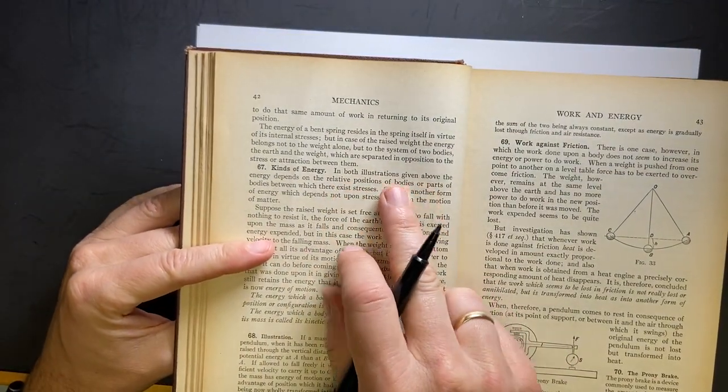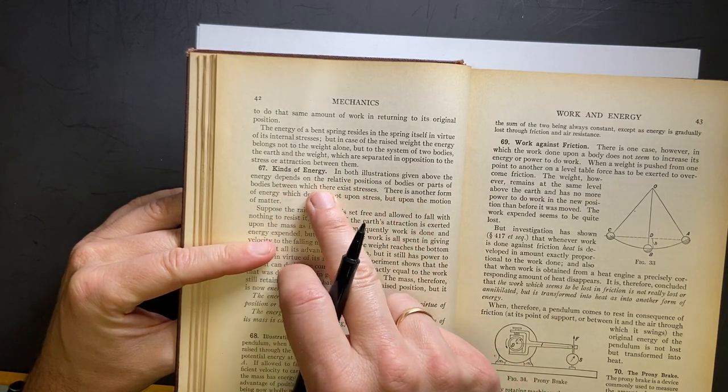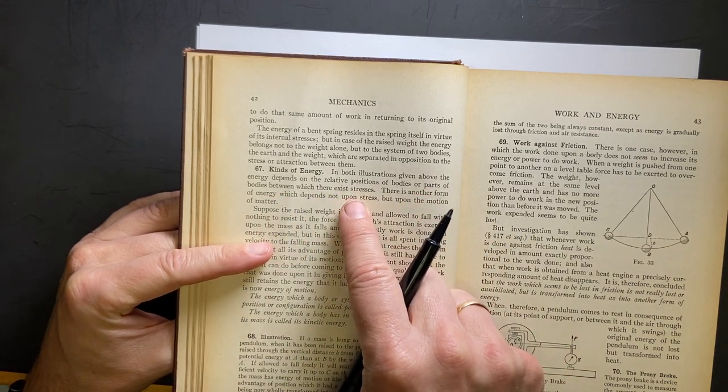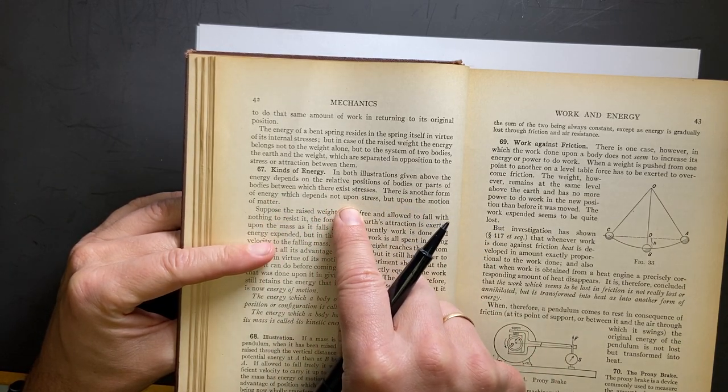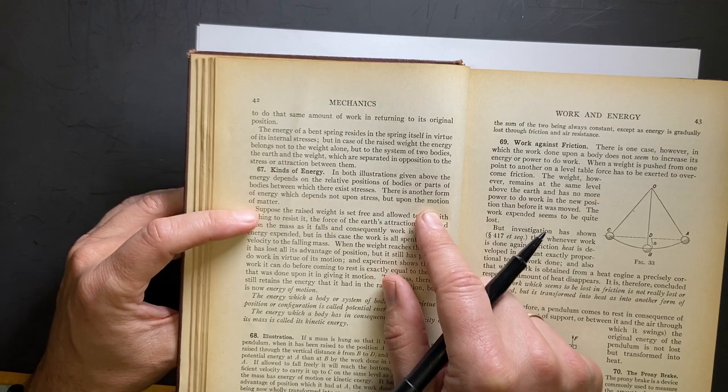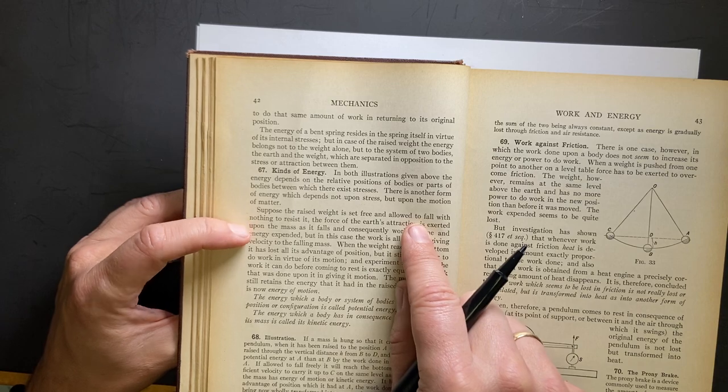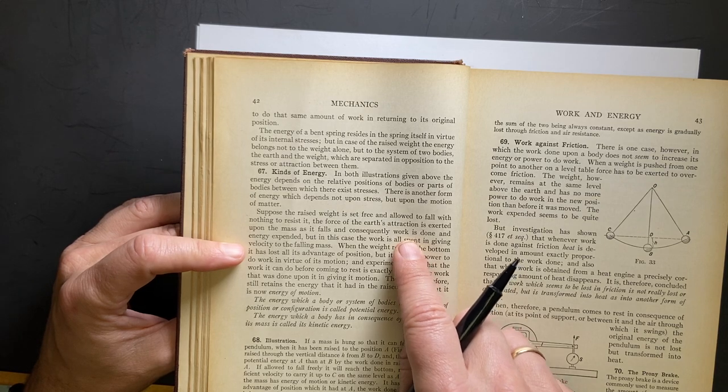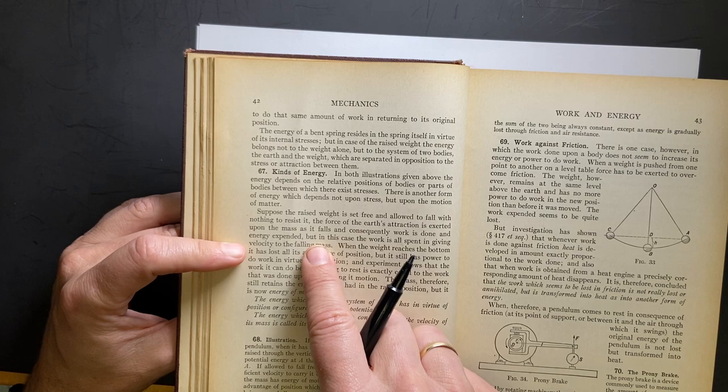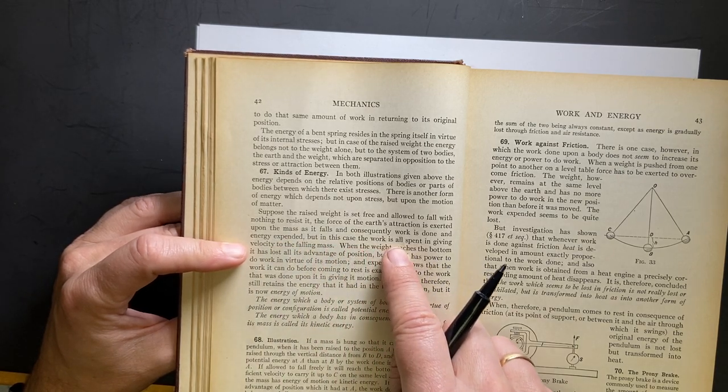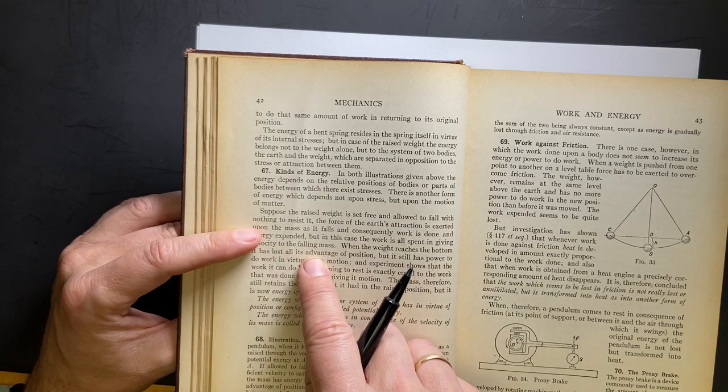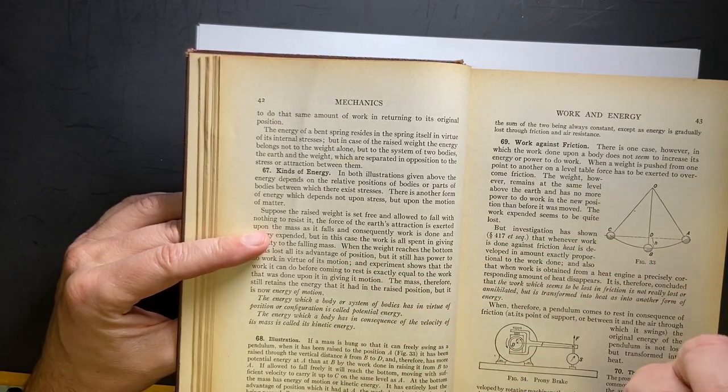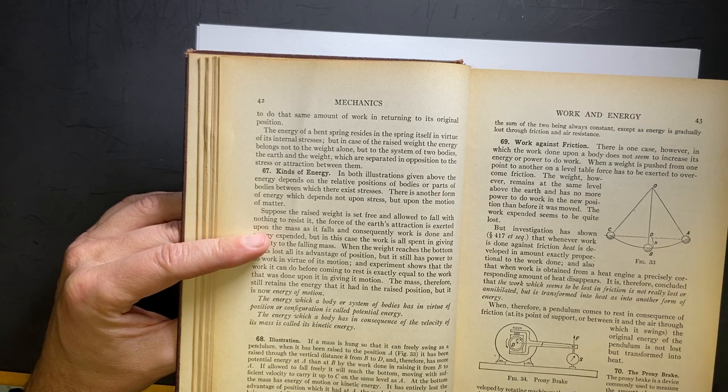Kinds of energy. Energy depends on the relative positions of the bodies or parts of the bodies between which there exist stresses. So that seems to imply like a spring potential energy. There's another form of energy which depends not upon stress but upon the motion of the matter. So I guess that would be kinetic energy. Suppose the weight is raised and set free and allowed to fall. With nothing to resist it, the force of the Earth's attraction is exerted on the mass that falls. And work is done and energy expended. I don't like that. Expended. But in this case, the work is all spent giving velocity to the falling mass. I think they're doing the basic, if you drop a ball, the ball increases in velocity. And since an increase in velocity has to be an increase in energy, gravity has to do work.